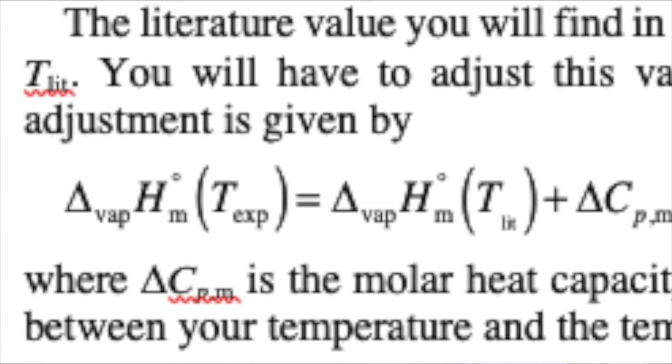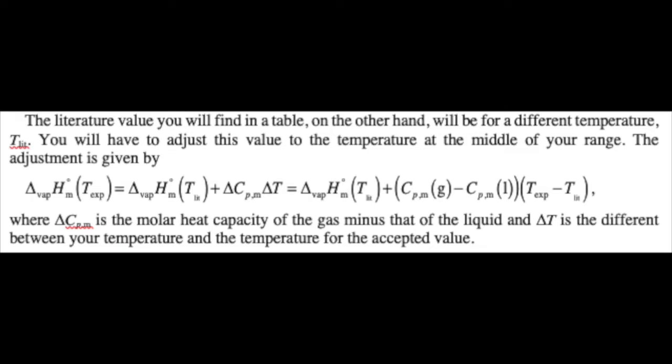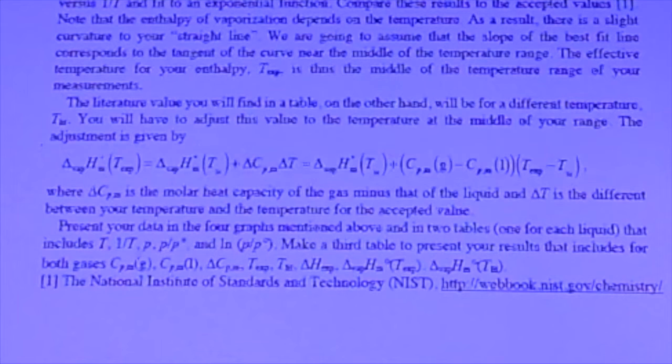How do we do that? We now know because we've done this in P-Chem lecture as well. We have this correction factor: ΔH of vaporization at some arbitrary temperature is equal to ΔH of vaporization at the literature value, at the standard value.